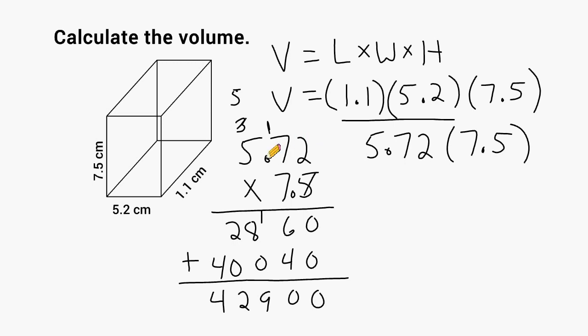And in the problem, we have two place values after this decimal and one after that decimal for a total of 1, 2, 3 place values altogether. So we go to the bottom here at the end and we jump over 1, 2, 3 place values.